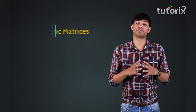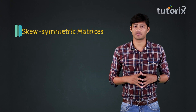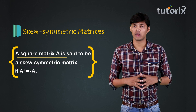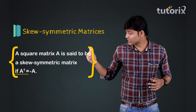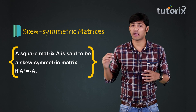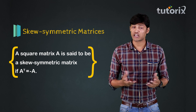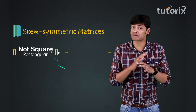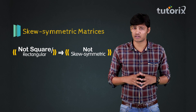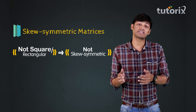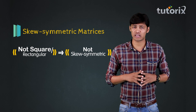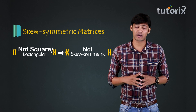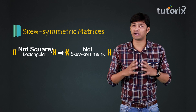Now let's define the skew-symmetric matrices. A matrix A is said to be a skew-symmetric matrix if A transpose is equal to minus A. As we have already discussed, the rectangular matrices can never be symmetric matrices. The same thing applies even for skew-symmetric matrices — that is, any rectangular matrix can never be a skew-symmetric matrix.